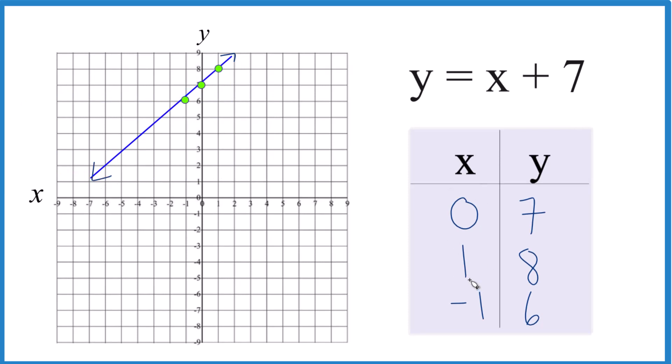You can use any values, and you'll get a value for y. When you graph the x and y, it'll be on the line for y equals x plus 7. I just chose these because they're kind of convenient.